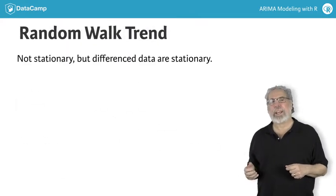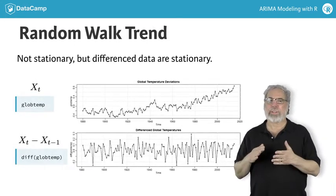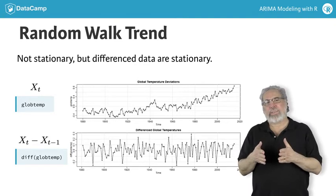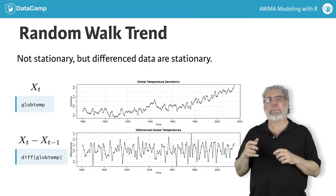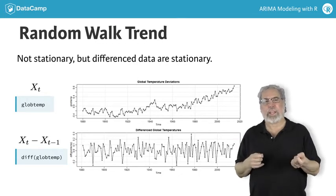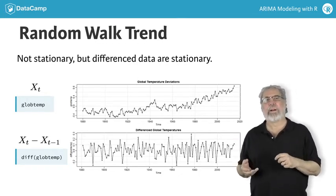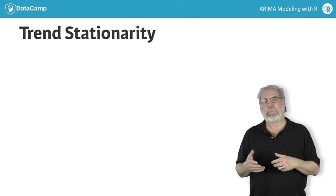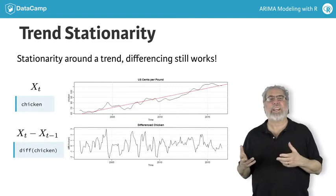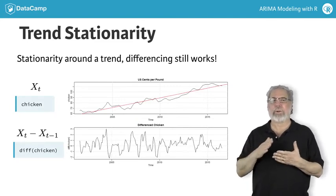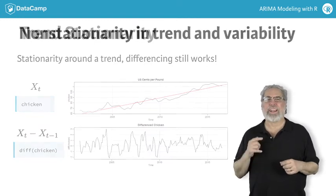The global temperature deviation series is an example of a random walk, where the value of the series at time t is the value it was at time t minus 1 plus a completely random movement. Differencing — today minus yesterday — can make this kind of process stationary. The price of chicken series is more like trend stationary, which is stationary behavior around a simple trend, and differencing works here too.